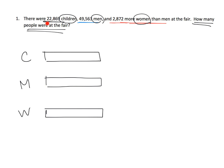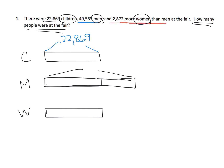It says there were 22,869 children. So that tells us we know that this number right here is 22,869. And then we're also told that there were 49,563 men. So that tells us the men tape is a little bit longer than the children — doesn't matter how long. And we're told that this number is 49,563. Then we're told that the women, there's 2,872 more women than men.